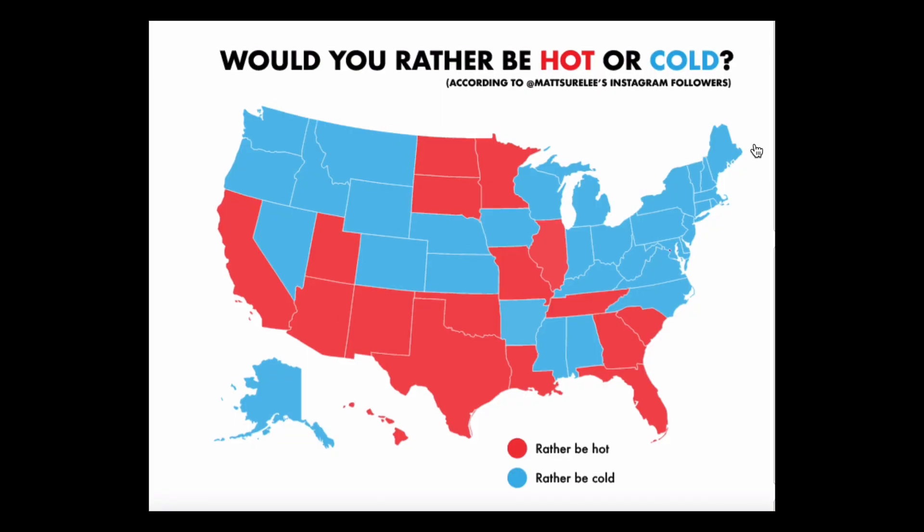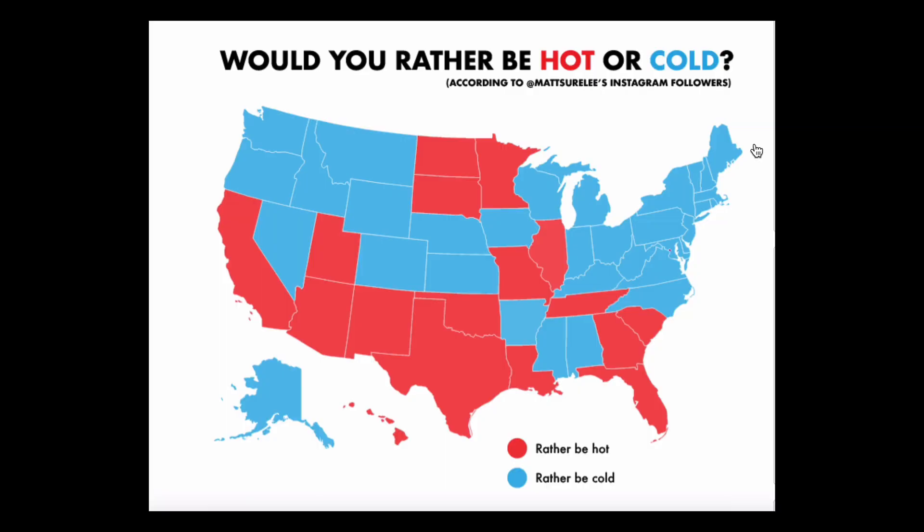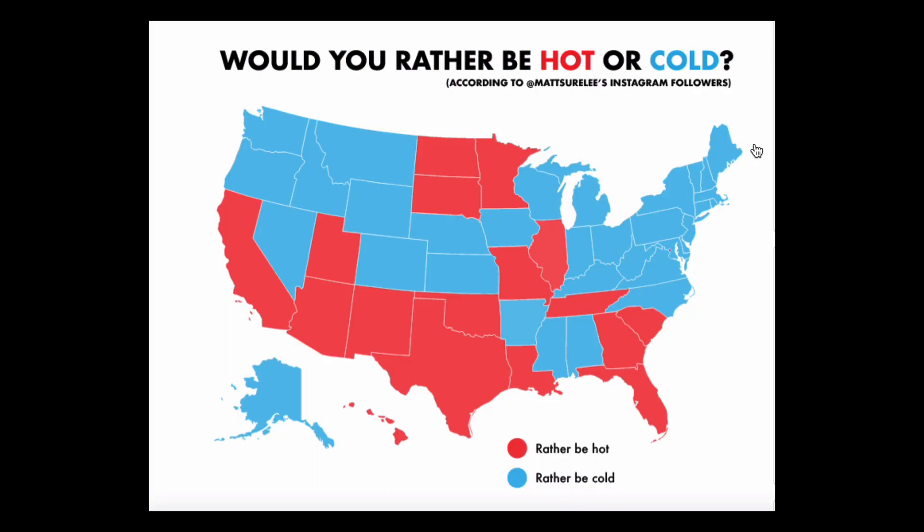So why I love this one is because it shows that anyone can make a data visualization and get the original data they want. This is just data taken from Matt Surley's Instagram followers, but it shows an insight. If you live in the southern states of the US where the weather is generally hotter, people would rather be hotter. And if you live in the northern states where it's generally colder, people would rather be colder. But what it does do is gets you thinking — do people live in hot states because they prefer the hot weather, or do they prefer the hot weather because they live in hot states? Simple, great fun. Thanks, Matt's 41.